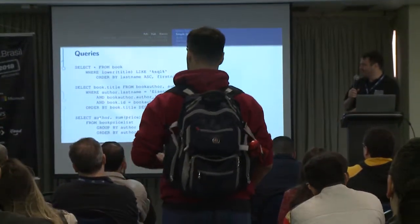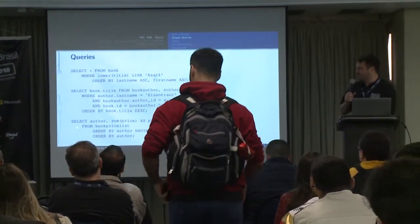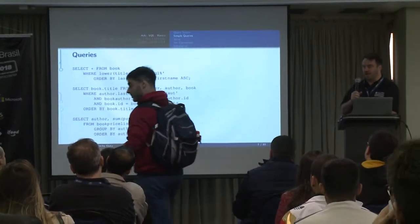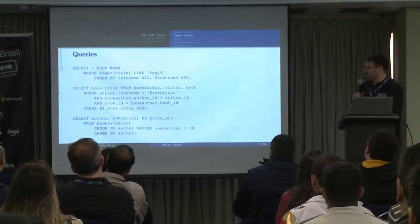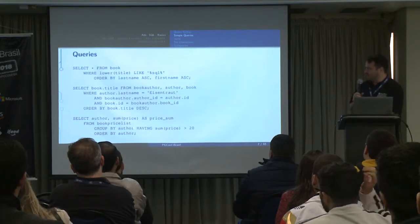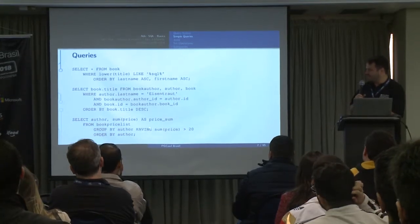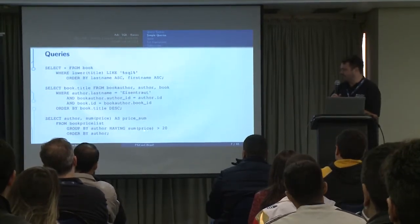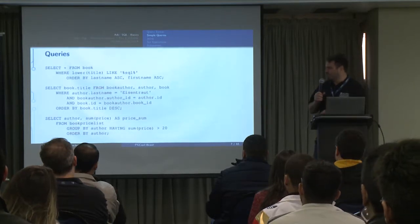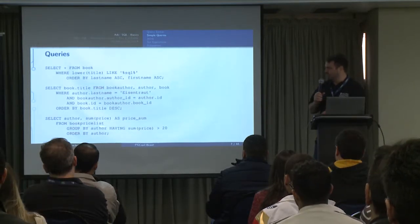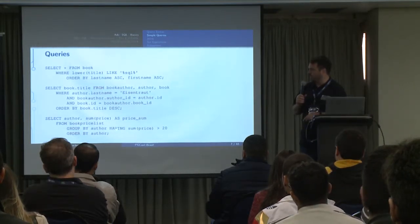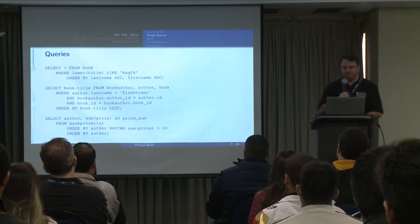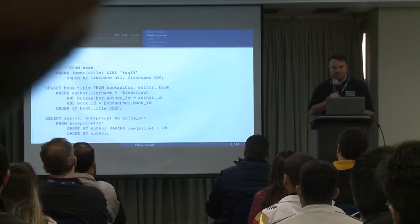We have basic GROUP BY, ORDER BY, and aggregation queries. These are pretty straightforward. We have a HAVING clause here — SUM of price has to be greater than 20 inside of this grouping clause in order to have a result from this particular query. These are all pretty straightforward, simple stuff.